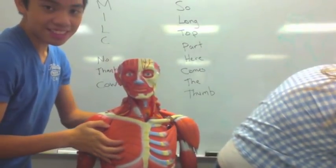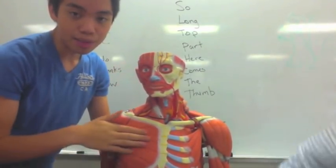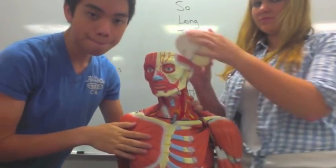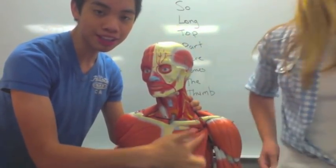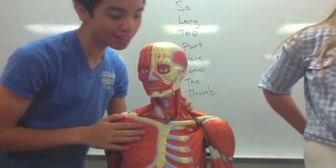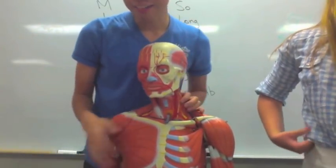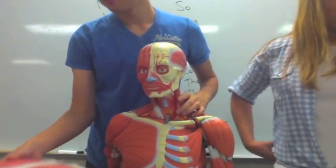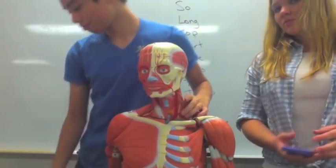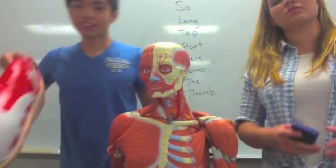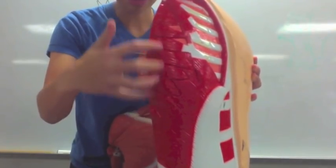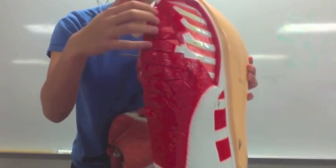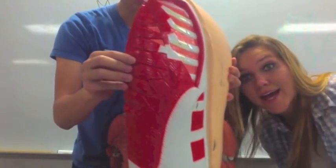We have the different muscles: the pectoralis major and the pectoralis minor. You have the serratus ventralis, which are these ones right here. It's serrated because of the ribs — it looks like a serrated knife.